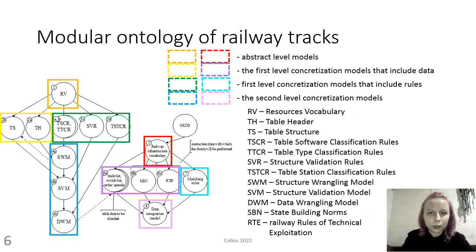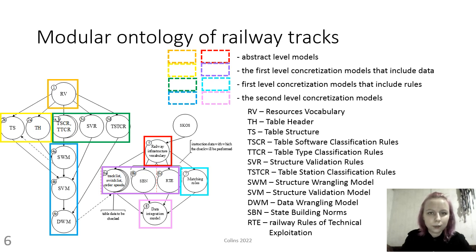We have developed ontologies of three levels. The abstract level is represented by vocabulary. The first level of concretization models are enriched with data and rules; T-block ontology schemas are completed, and vocabulary classes are associated with instances. In the second-level concretization model, rules are associated with the data set, making it possible to form several ontologies based on a single first-level ontology with different data introduced.